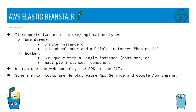AWS Elastic Beanstalk supports two application or architecture types: web servers and workers. A web server application may include a single instance or a load balancer with multiple instances behind it. In the case of a worker application, we're going to have an SQS queue with just one consumer, a single instance, or multiple instances or consumers.